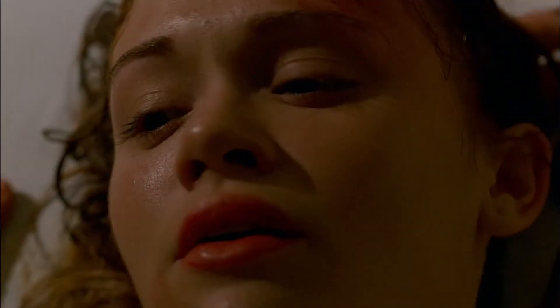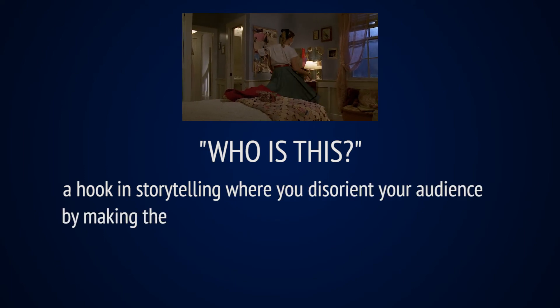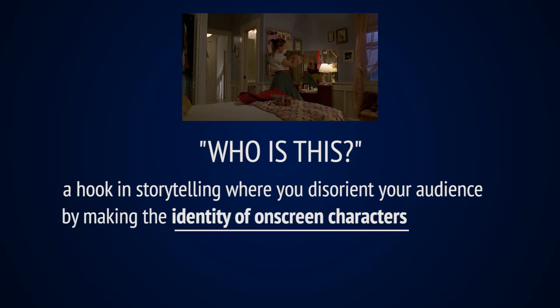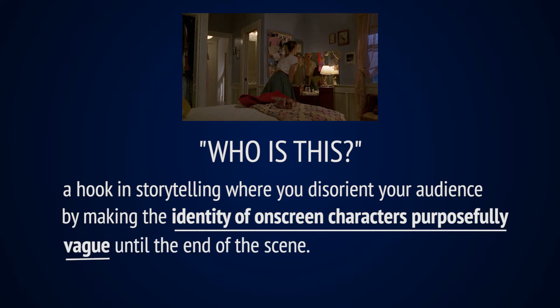So what was disorienting here? Well, there was no John at all. In fact, we don't know who any of these characters are in this clip until the very last line. I call this technique 'Who Is This?' — a hook in storytelling where you disorient your audience by making the identity of the on-screen characters purposefully vague until the end of the scene.